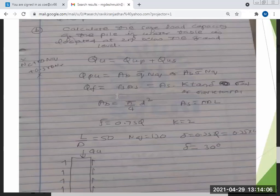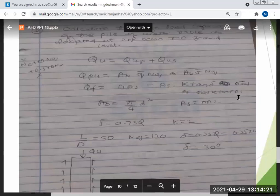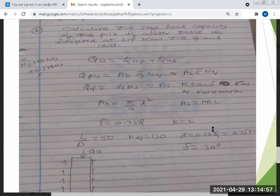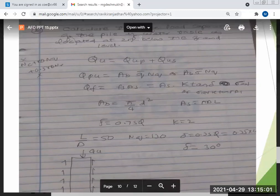Frictional resistance, how do you get the frictional resistance? Fs into As. As is given by pi into D into L. Fs is given by sigma average into K into tan delta. Delta is 0.75 of phi. K coefficient of earth pressure will be given to you. Sigma average. So this is all about the formula. Please if anyone has any problem you can ask. I have to explain it with a few questions.